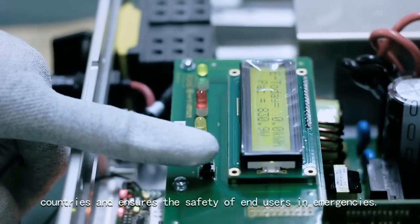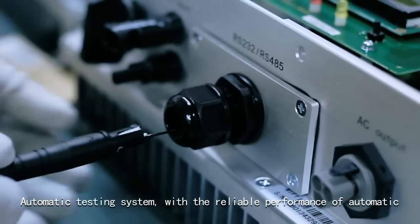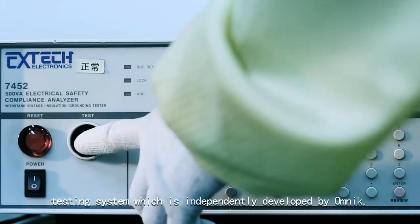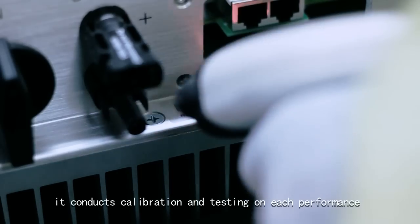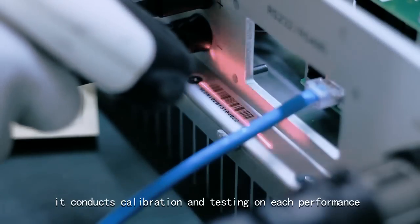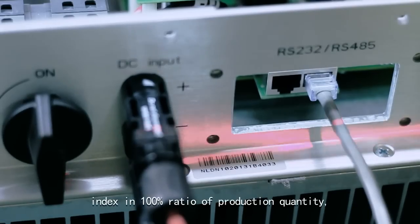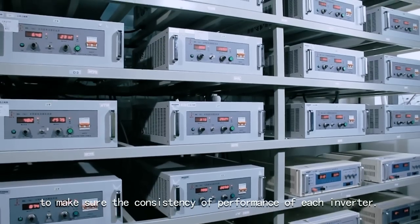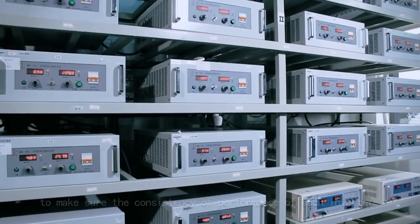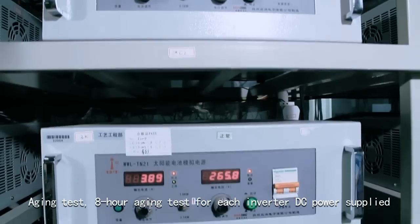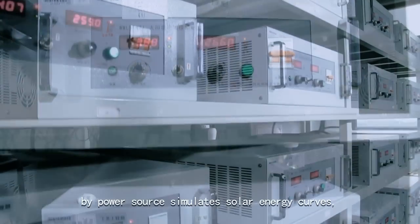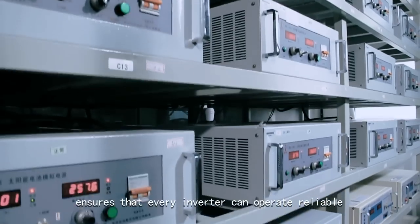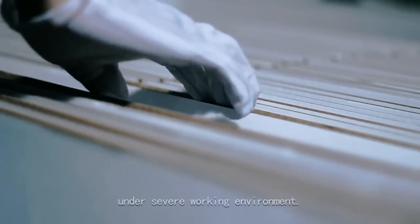The automatic testing system, independently developed by Omnic, conducts calibration and testing on each performance index in 100% ratio of production quantity to ensure the consistency of performance of each inverter. Eight-hour aging test for each inverter with DC power supplied by power source simulates solar energy curves, ensuring that every inverter can operate reliably under severe working environments. Accurate packaging design guarantees safe delivery worldwide.